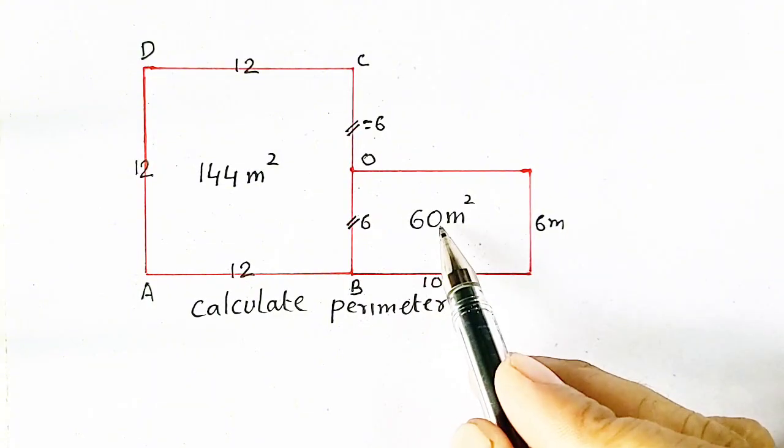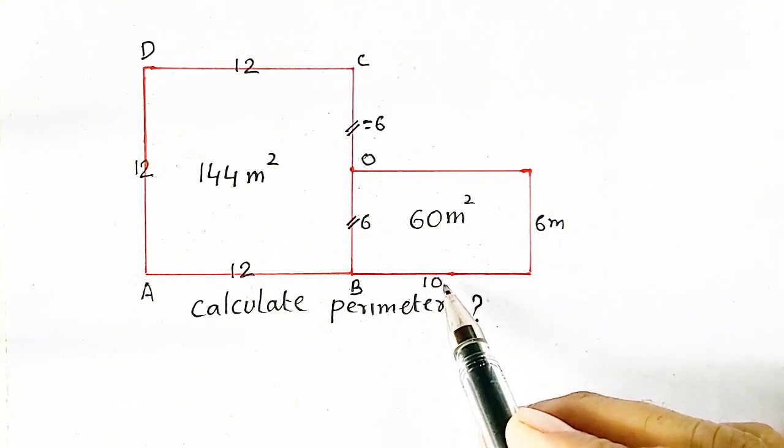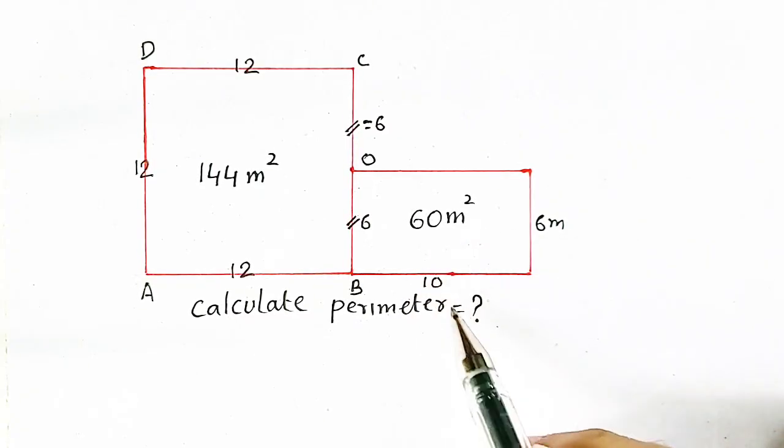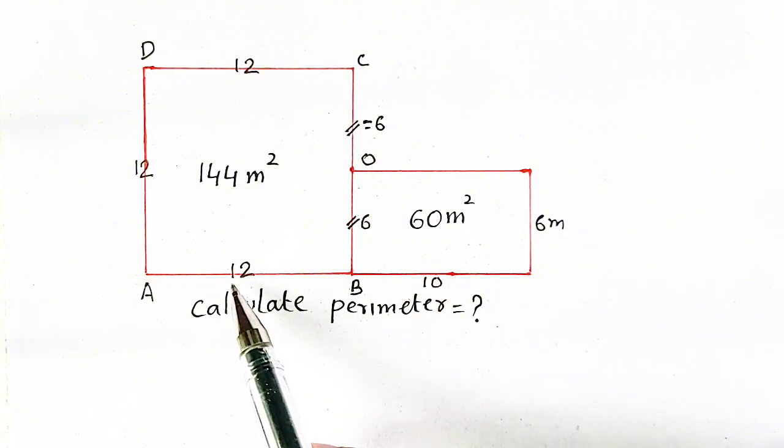So a rectangle will be 60. 10 times 6 will be equal to 60. So its length will be equal to 10. Now it is quite easy to find its perimeter.